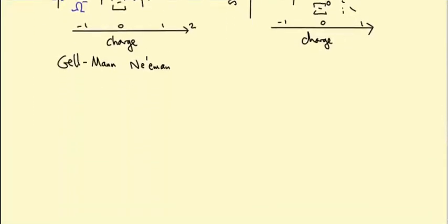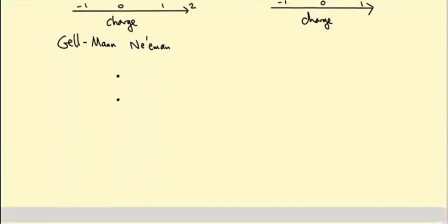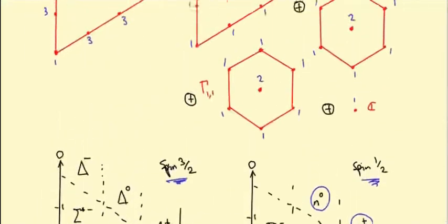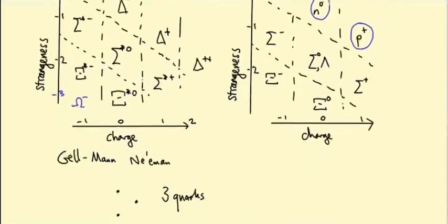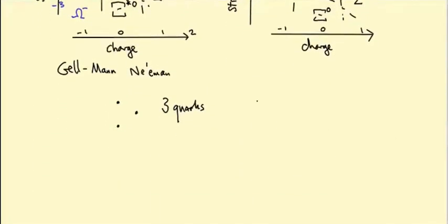So what is the proposal? The proposal is that each of these particles should be made up of three smaller particles called quarks. Why three quarks? Well, because this is C3 tensor C3 tensor C3. There are three factors of C3, so it's not the three in the exponent, it's the fact there are three factors in the sense of product, because each factor will correspond to a single quark. So three quarks.